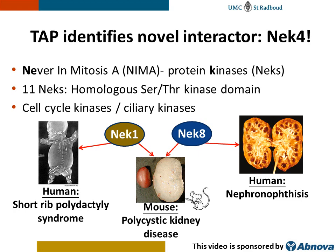Why was NEC4 so interesting to us? It belongs to a family of kinases which have been implicated in cell cycle regulation. However, recent studies have also linked some NECs to ciliary functions. NEC1 mutations, for example, were identified in human patients suffering from the ciliopathy short rib polydactyly syndrome. While in murine models, NEC1 mutations caused polycystic kidney disease, which is also a hallmark of ciliopathies. Also, NEC8 mutant mice showed kidney cysts, and NEC8 mutations were found as a rare cause for a human renal cystic disease. These clues indicated that NEC4 could be a putative ciliary gene, which prompted us to further characterize NEC4.